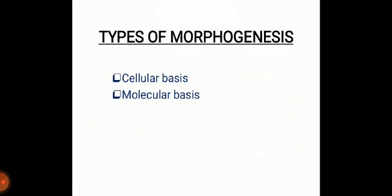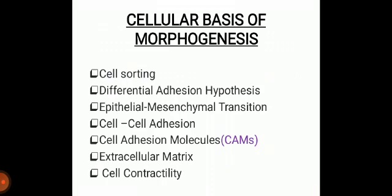Here are the different types of morphogenesis: number one molecular basis and number two cellular basis. Molecular basis refers to the biological activity in and between the cells including molecular synthesis, modification, mechanism and interactions. The cellular basis refers to processes carried out at the cellular level but not necessarily restricted to a single cell. The cellular basis of morphogenesis includes seven basic steps or mechanisms: cell sorting, differential adhesion hypothesis, epithelial-mesenchymal transition (EMT), cell-to-cell adhesion, cell adhesion molecules (CAMs), extracellular matrix, and cell contractility.